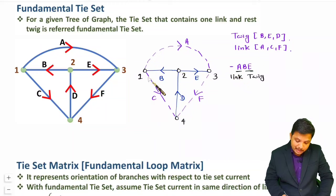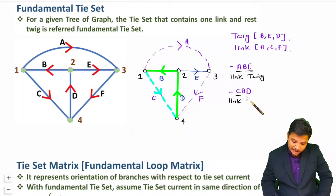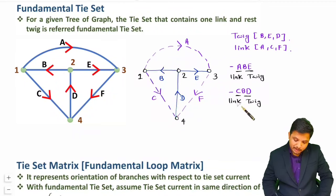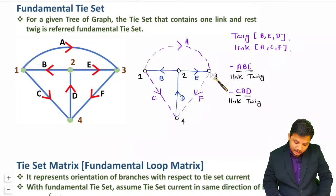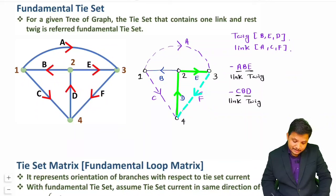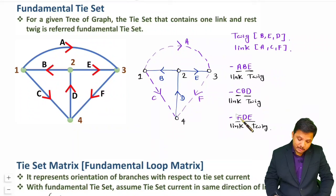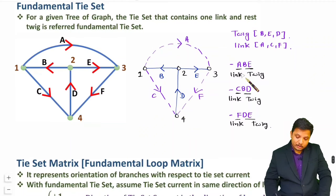When you consider link C, there is one closed loop CBD — that is also a fundamental tie set. In this, C is the link and B and D are twigs, so one link and rest twigs. Now with link F, it forms a loop FDE in which D and E are twigs. So F is the link and the rest are twigs. For this tree we have three fundamental tie sets.